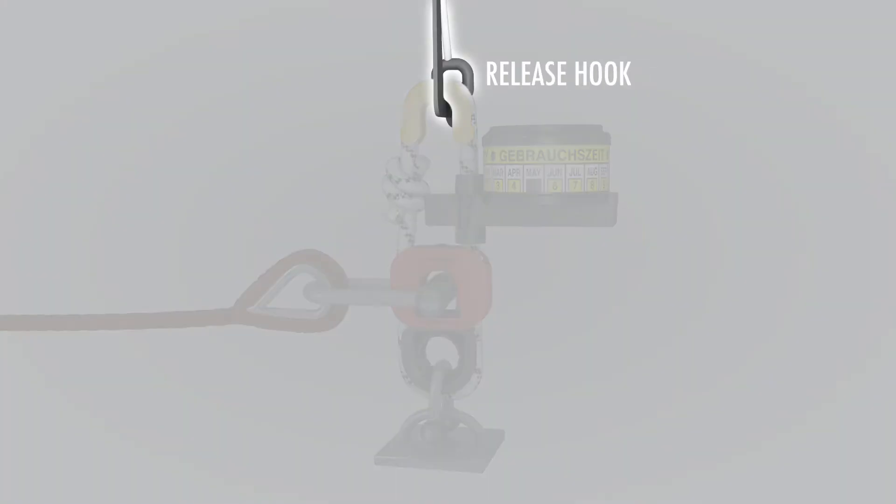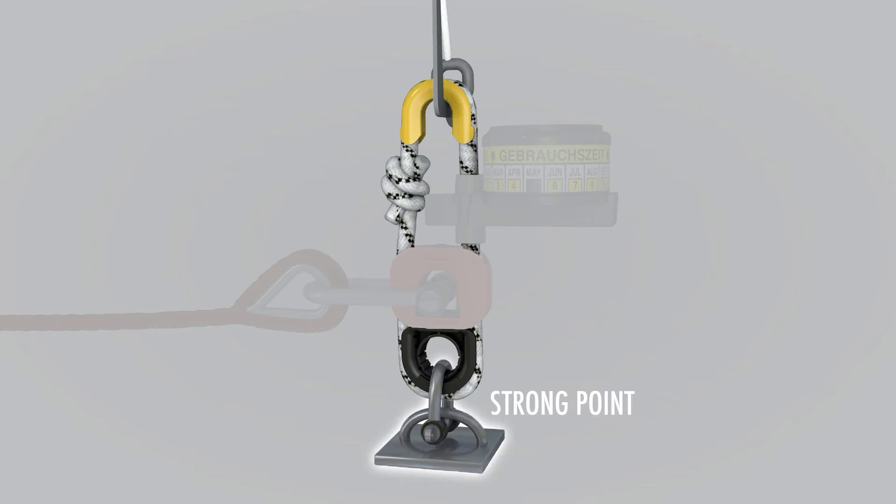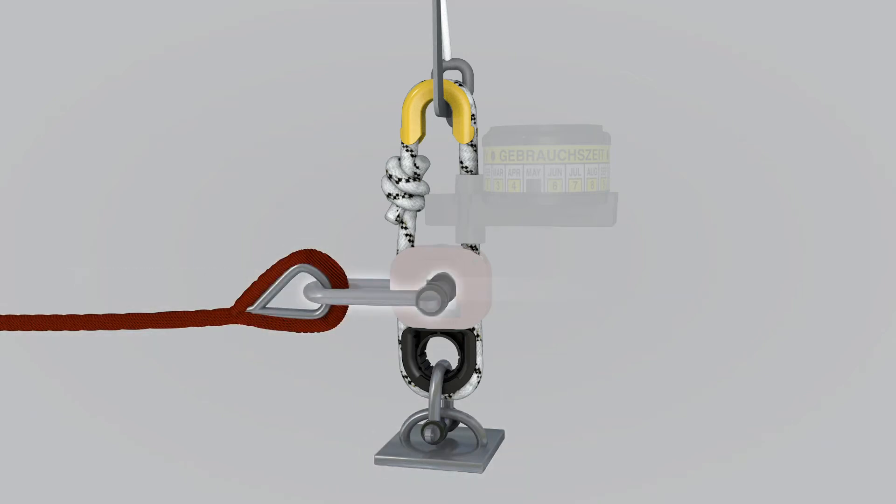The raft's release hook is connected by the H-20 strong rope to the strong point. The raft painter line is attached by a shackle to the H-20 weak link connector.